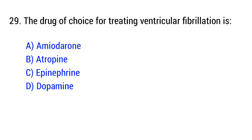Question number 29. The drug of choice for treating ventricular fibrillation is? The right answer is option A: Amiodarone.